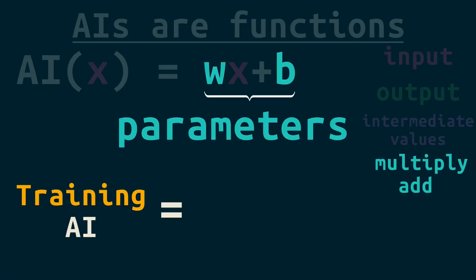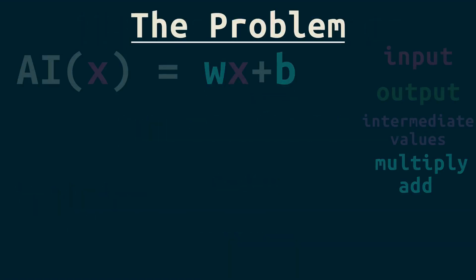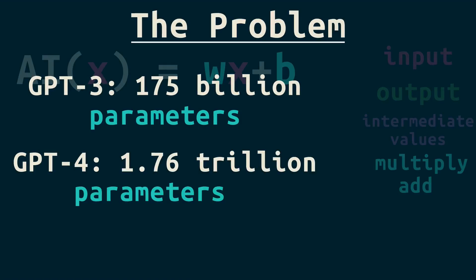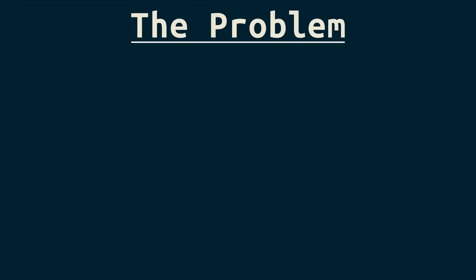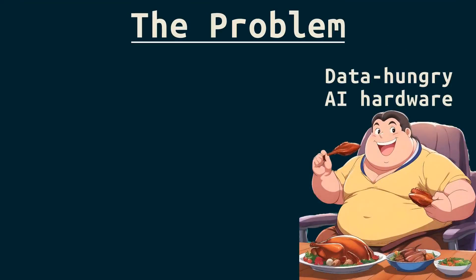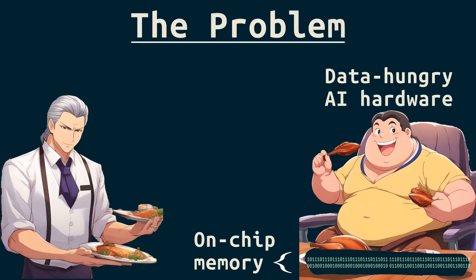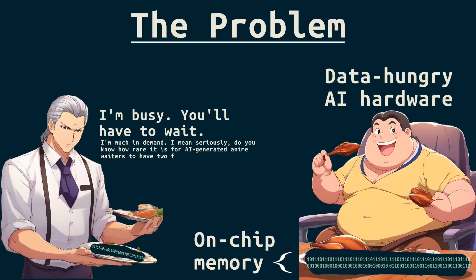Training AI is just the process of finding good parameters. The problem is that AI models have billions or trillions of parameters, plus a lot of intermediate values. We'd like to keep all those numbers close to the data-hungry AI hardware. But this table, that is, the on-chip memory that holds data as we work with it, is small. And getting things onto the table, that is, transferring data onto the chip, is often an even bigger problem, costing time and energy.